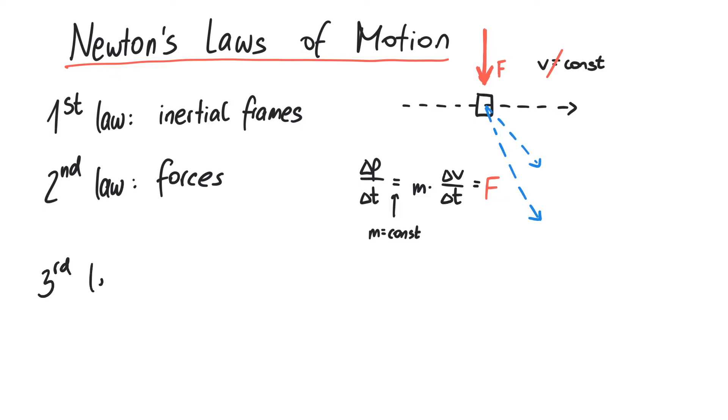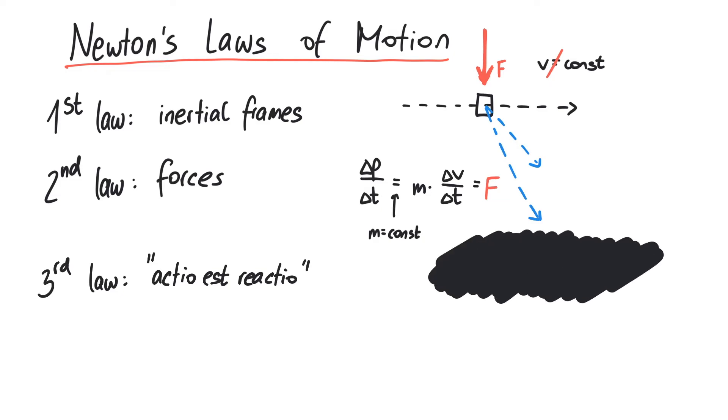The third law defines how forces act on a body. Whenever an object exerts a force on a second object, the second one also applies a force of equal magnitude and opposite direction on the first one. This is, for example, how astronauts can move in space.